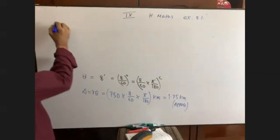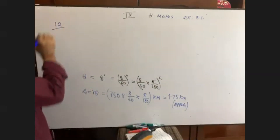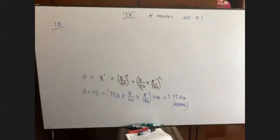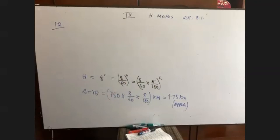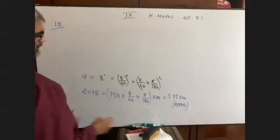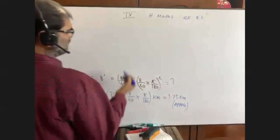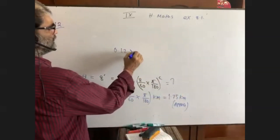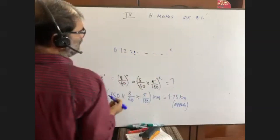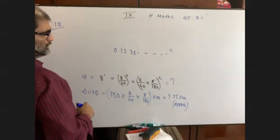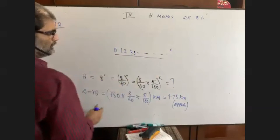Some of you may get the result as 0.1235 radians — please avoid expressing it in radian form like that. Now go to Question number 12: a person jogging on a circular track at 6 kilometers per hour.